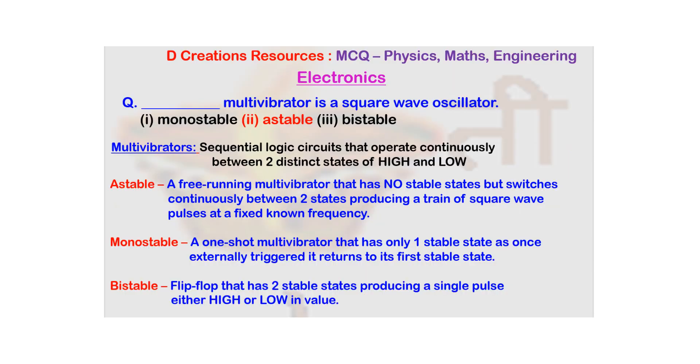So what exactly are multivibrators? They are basically sequential logic circuits that operate continuously between two states: high and low. Now there are three types of multivibrators: astable, monostable, and bistable. Actually, the name itself gives you a hint of what they would be.